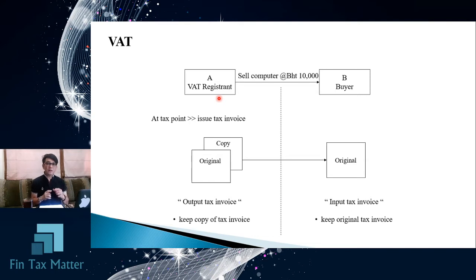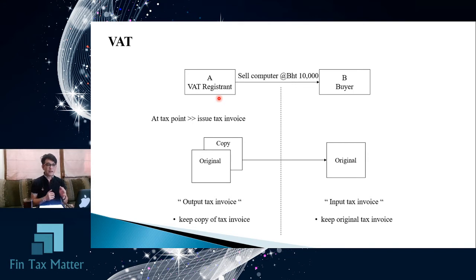Unless the original tax invoice is damaged or lost, a duplicate tax invoice may be made to prove the input tax amount. Making a duplicate is allowed only in cases where the tax invoice is damaged, lost, or destroyed in an emergency or accidental situation. There is a regulation for the preparation of a duplicate tax invoice.